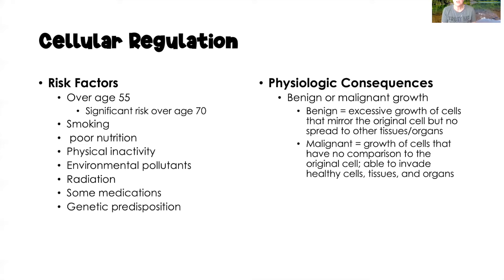The physiologic consequences of impaired cellular regulation include benign or malignant growths. A benign tumor is an excessive growth of cells, but those cells will mirror the original cell and will not spread to other tissues and body organs. A malignant or cancerous growth, however, involves cells that have no comparison to the original cell — they can invade healthy cells, tissues, and organs, which is called metastasis.